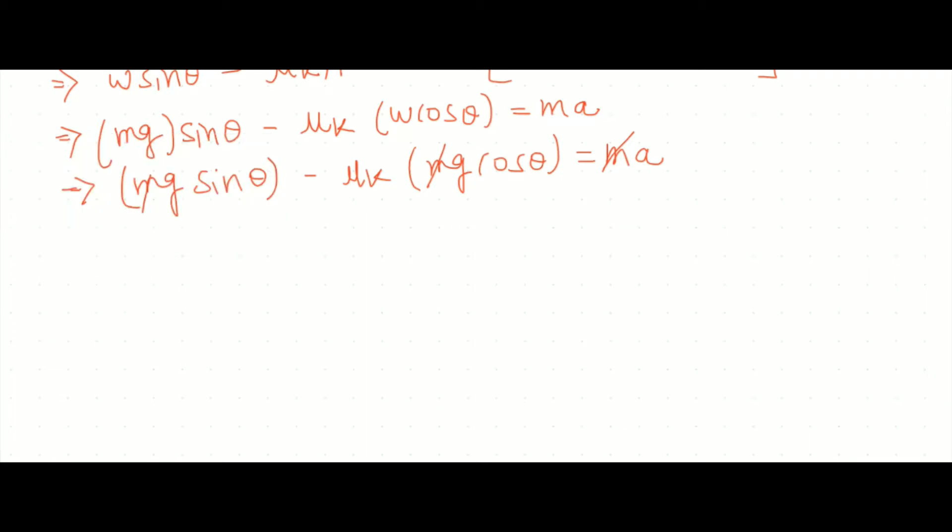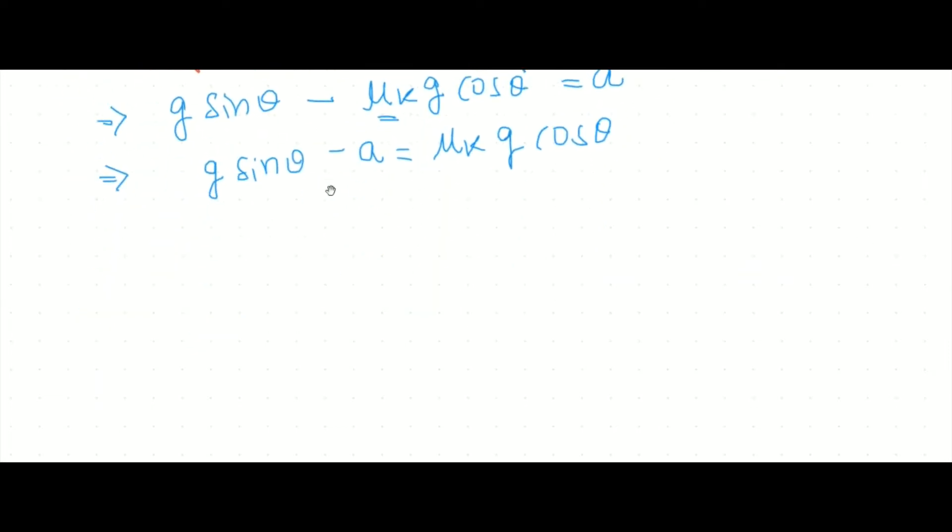So the final equation which we are getting is g sin theta minus mu k times g cos theta is equal to a. We know the value of g, we know the value of theta, and we know the value of a. So the only unknown is mu k. So let's rearrange this equation. We will take g sin theta and we will take a over to the left, and we take this part over to the right. Dividing both sides by g cos theta, we get g sin theta minus a over g cos theta is equal to mu k.